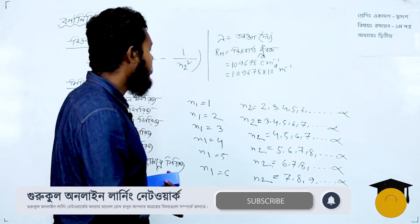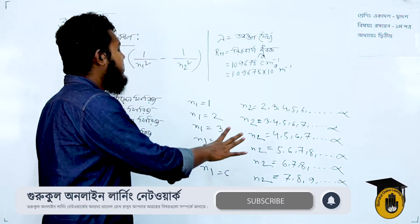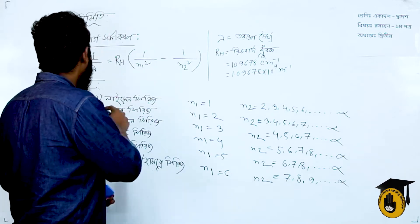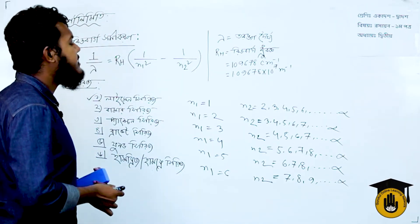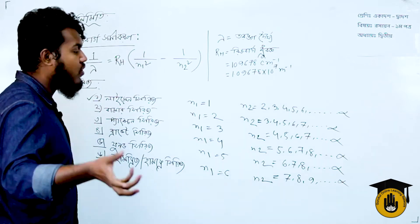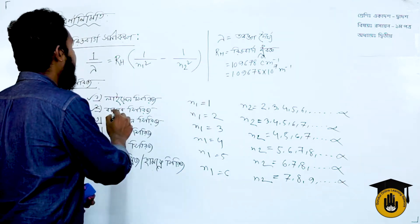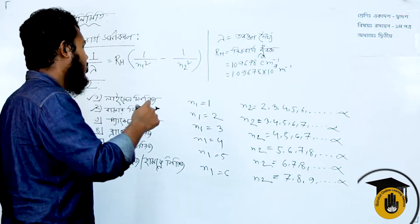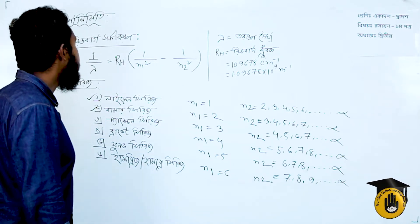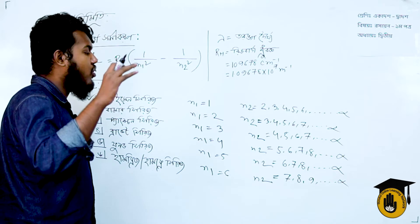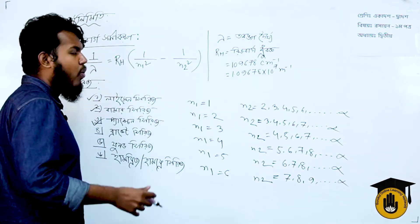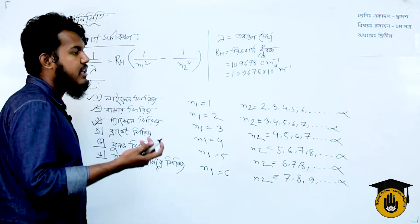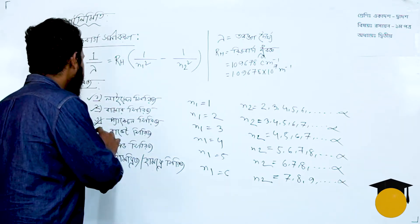So to summarize: from n1=1, n2 is 2,3,4,5,6 to infinity. From n1=2, n2 is 3,4,5,6,7,8. From n1=3, n2 is 4,5,6,7,8 to infinity. From n1=4, n2 is 5,6,7,8,9 to infinity. This last one is called the Brackett series.